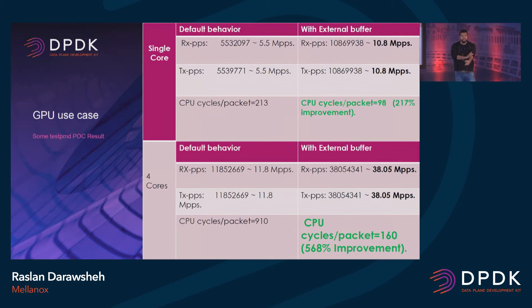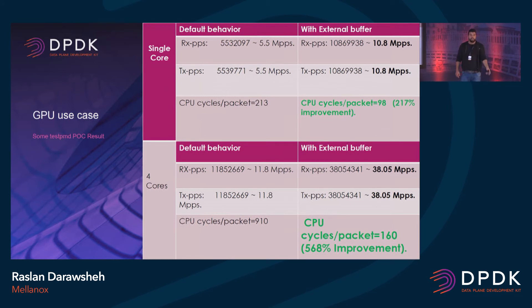Once we moved to multiple cores — with four cores — we got around 600% improvement, especially with CPU cycles.